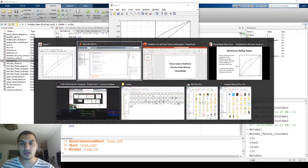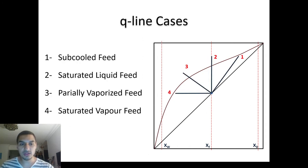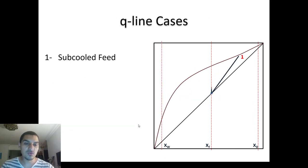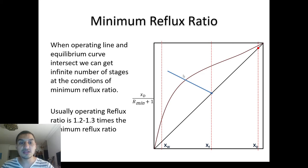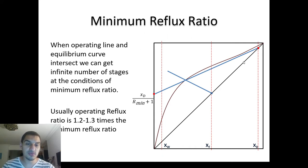Now we will see how to draw the top section line. We know from the equation of the top section that it is a straight line connecting the point (xd, xd) to the point (0, xd/(r+1)). But we do not know r, so we need to find r by calculating the minimum reflux ratio — the value that gives an infinite number of stages. This happens when the top section line intersects the equilibrium curve, and that intersection point will be xd/(1 + r_minimum).